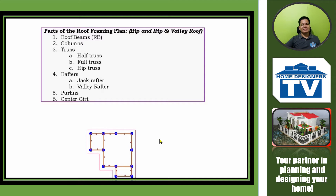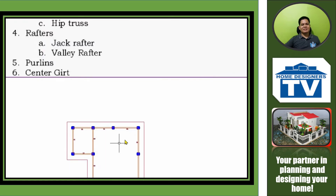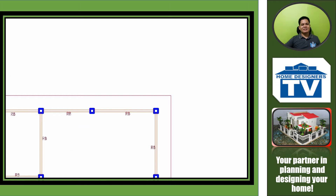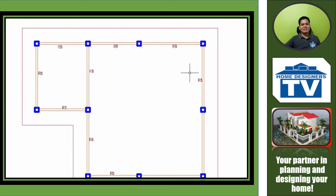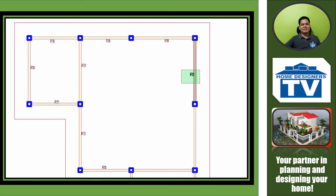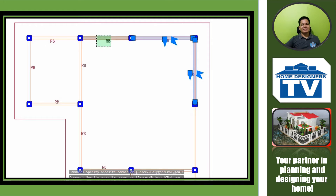Here is an example of the plan where these parts are located. First, roof beams — the red parallel lines labeled as RB are the roof beams.